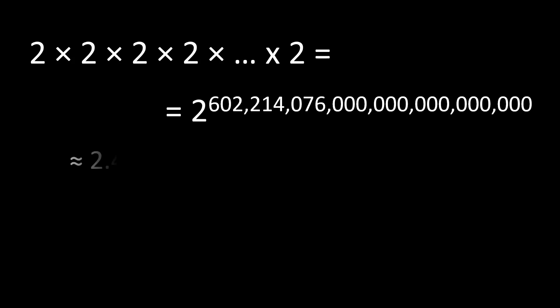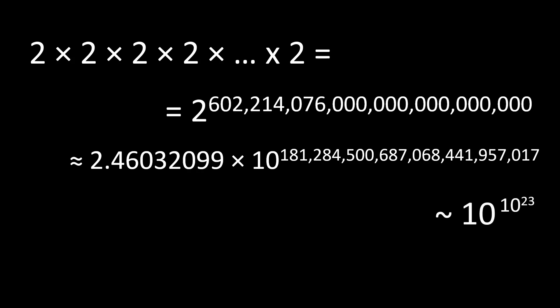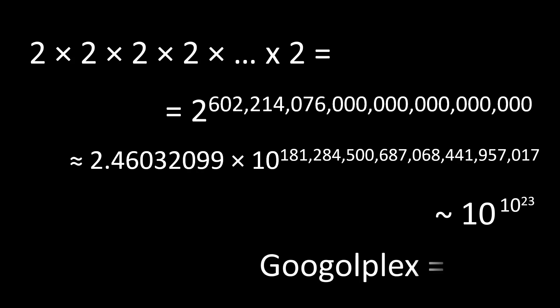That's approximately this number in scientific notation, and as a shorthand you can think of it as 10 to the 10 to the 23rd power. You might have heard of a Googleplex, which is 10 to the 10 to the 100th. This is a lot smaller than that, but it's still an insanely huge number of combinations.